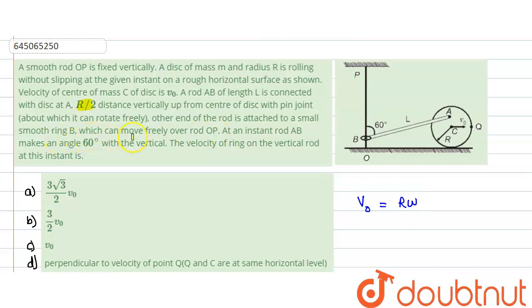The ring can move freely over rod OP. At that instant, rod AB makes an angle 60 degrees with the vertical. We need to find the velocity of the ring on this vertical rod at that instant.